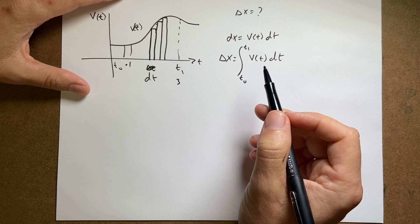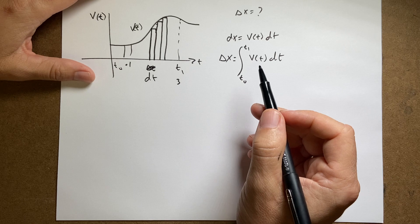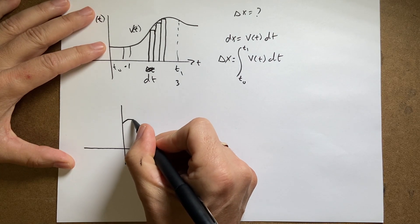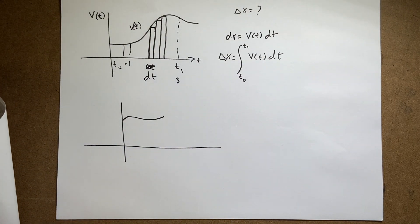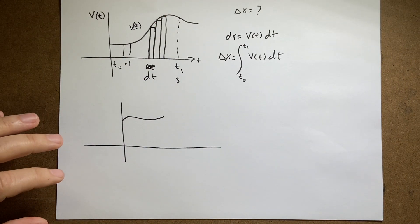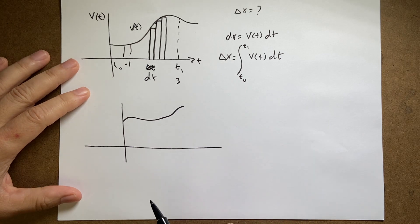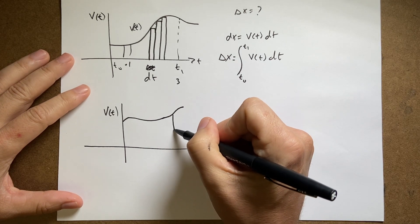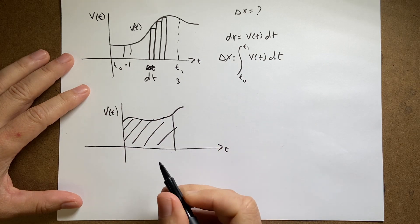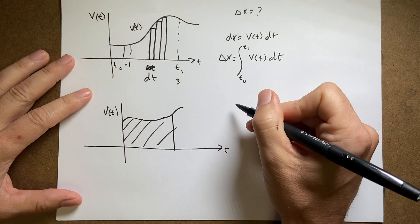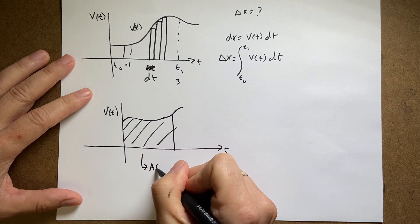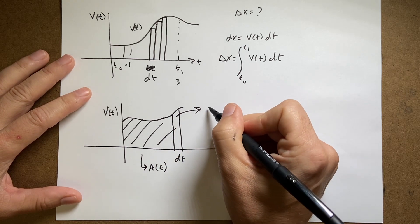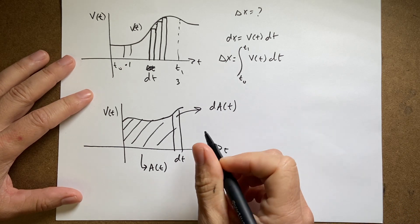This is where we get the fundamental theorem of calculus. Let me draw another curve — here's v as a function of t. If I integrate up to some point, I get delta x, which is the area under the curve — I'll call it A as a function of t. If I let it go a little further by dt, I get added area dA(t), which is that new piece.